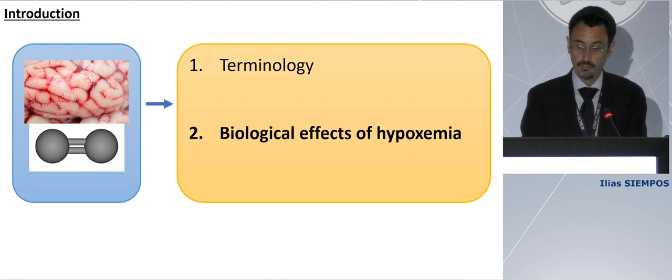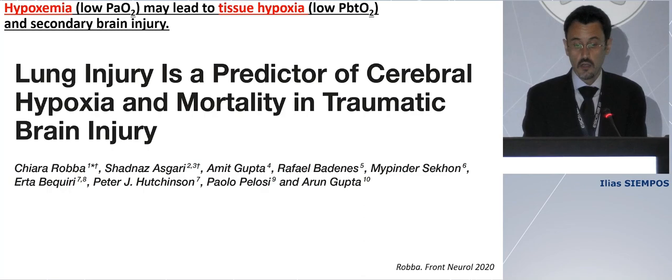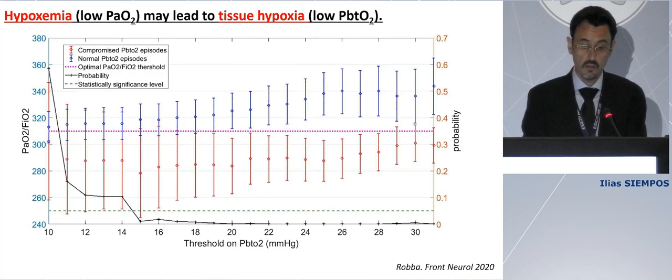Let's move on to biological effects of hypoxemia. Here is a study from Dr. Roba. She showed that hypoxemia — low PaO2 — as a result of lung injury led to tissue hypoxia, low brain tissue oxygen tension, and to secondary brain injury and higher mortality. This is a figure showing the complex association between hypoxemia and tissue hypoxia.